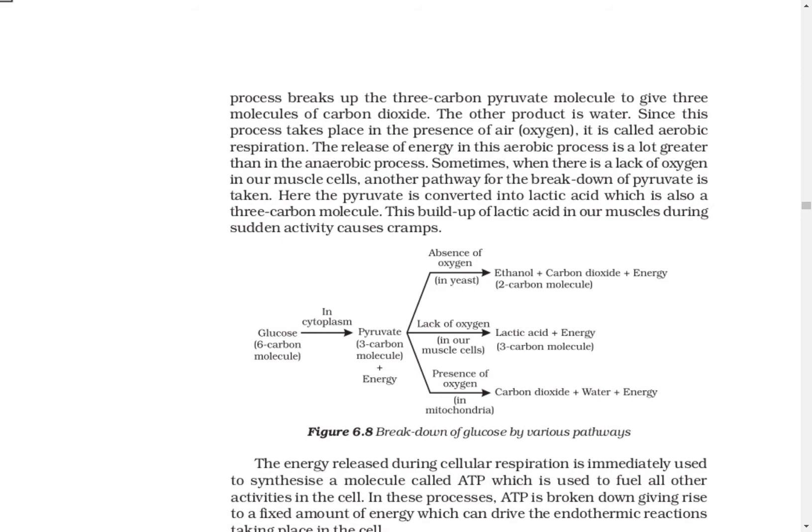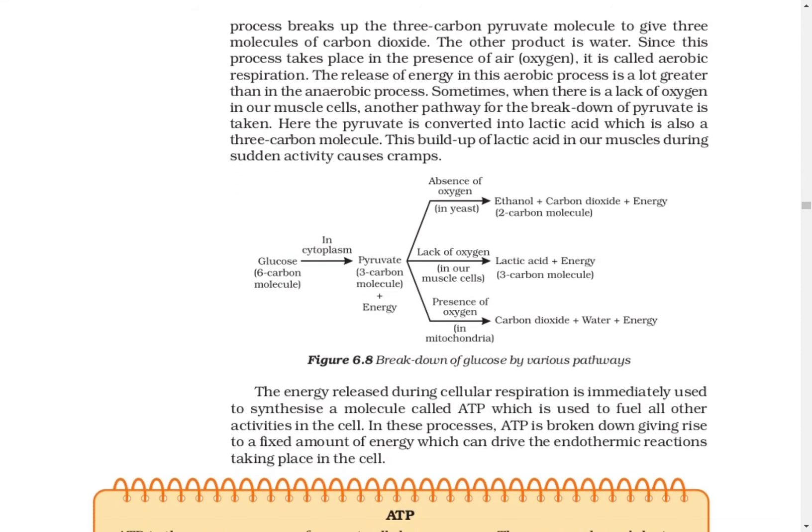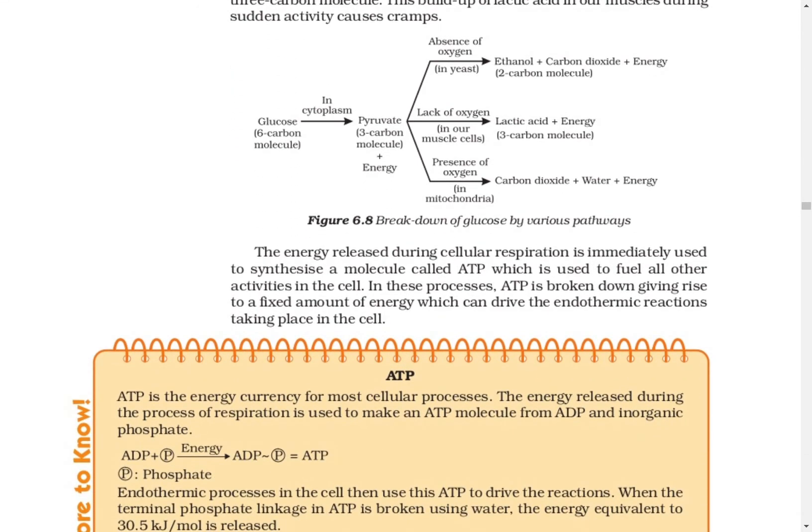If there is a lack of oxygen where we generally get oxygen — such as in our muscle cells when we do a lot of activity — then it produces lactic acid and energy. Whatever energy is released during respiration, it is stored in a molecule which is ATP. ATP breaks down and keeps producing energy, helping in all activity zones within the cell.